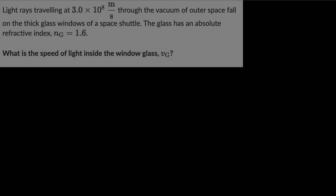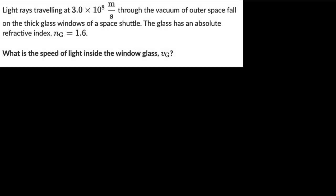Let's explore the ideas of absolute and refractive indices by solving a few numericals. We are given light traveling at 3 times 10 to the power 8 meters per second through the vacuum of outer space, which falls on a thick glass window of a space shuttle. The glass has an absolute refractive index of 1.6. What is the speed of light inside the glass window?